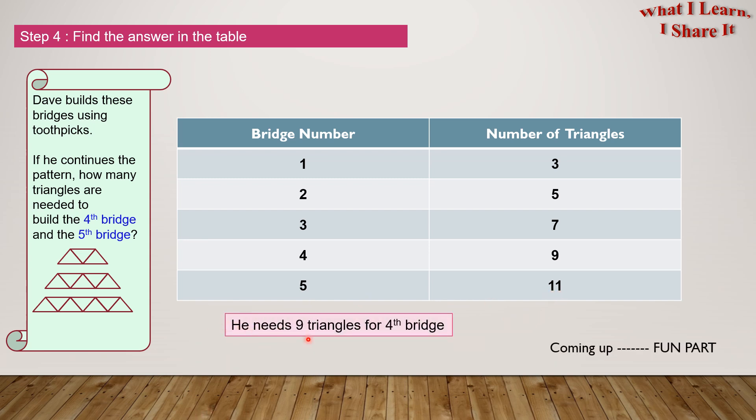He needs 9 triangles for the 4th bridge and 11 triangles for the 5th bridge. Yay! We solved the problem!